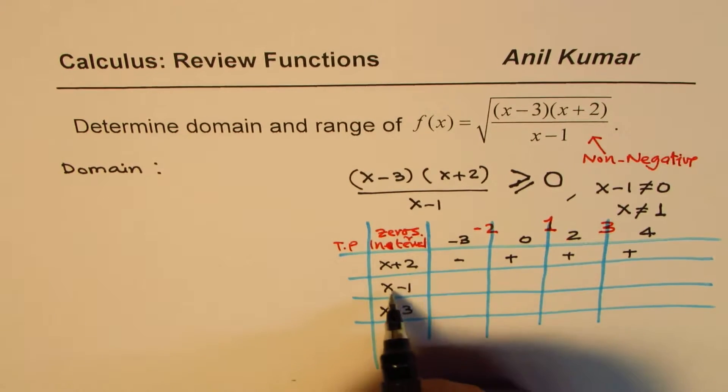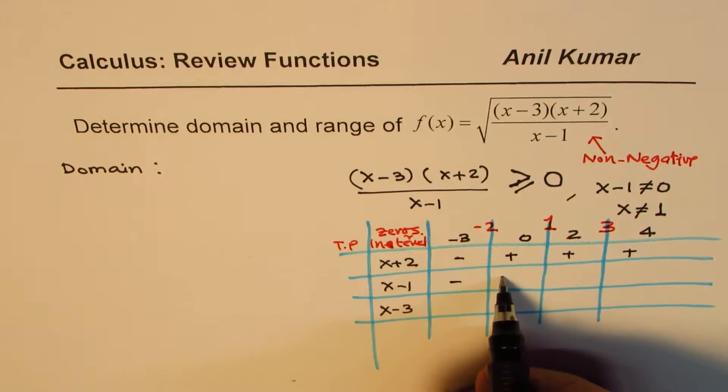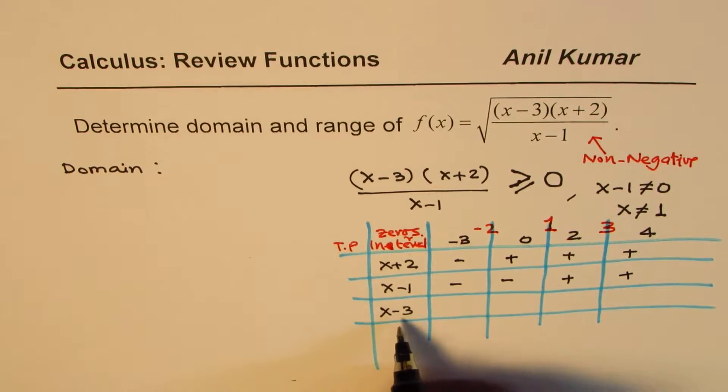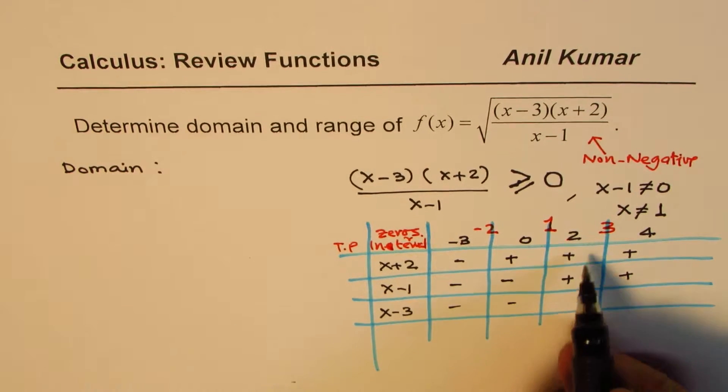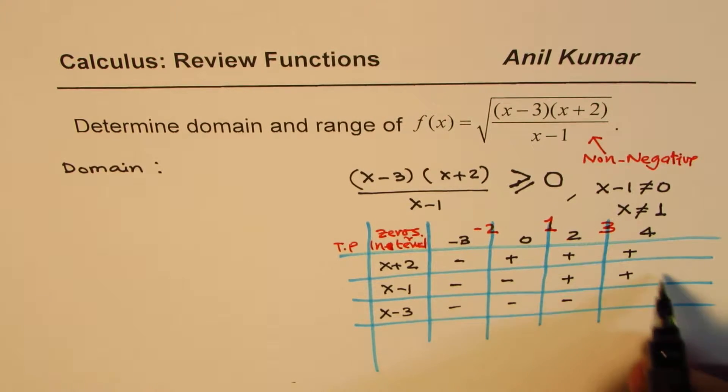For x minus 1, minus 3 will give me negative. 0 will give me negative. 2 and 4 will give me positive. For x minus 3, minus 3 will make it minus 6, which is negative. 0 will be minus 3, which is negative. 2 will be minus 1, which is negative. 4 will be plus 1, which is positive.